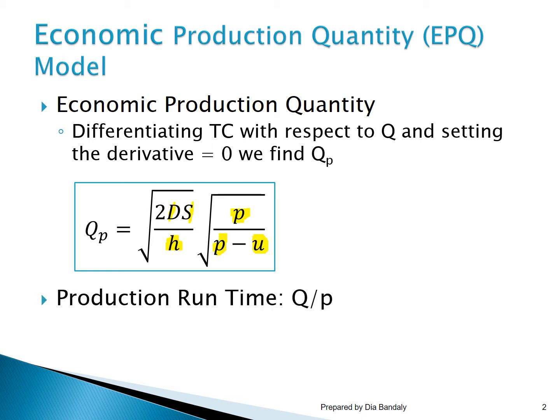The production runtime is the time from when production starts until it stops. In a previous example it was three days. It is calculated as Q divided by the production rate P. The cycle time is exactly as in the EOQ — in EOQ we write Q over D, and here U is the demand rate, so we express cycle time as Q over U.